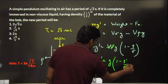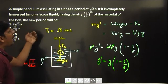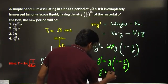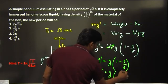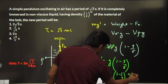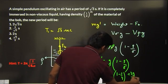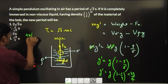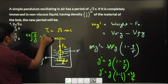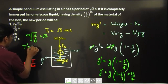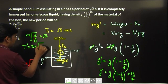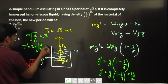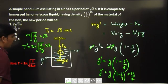It is given that the liquid has density one-fourth that of the material, so ρ = σ/4 and ρ/σ = 1/4. Therefore, effective g = g·(1 − 1/4) = 3g/4. Initially, the time period T = 2π√(L/g) = √3 s. In the liquid, the new time period T' = 2π√(L / (3g/4)) = 2π√(4L/3g), and √4 = 2 comes outside the root.